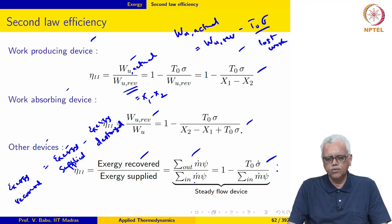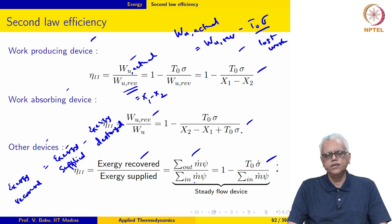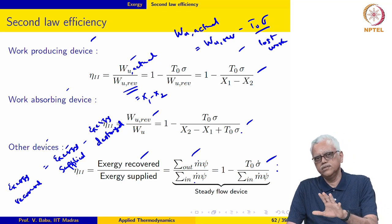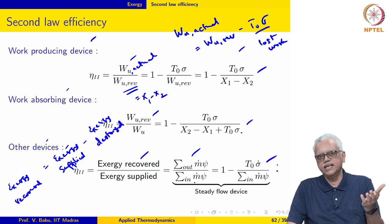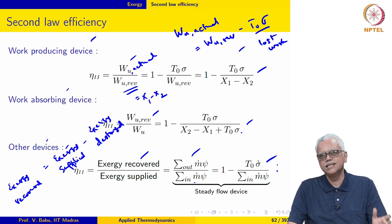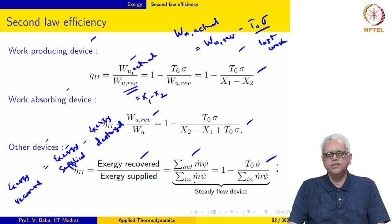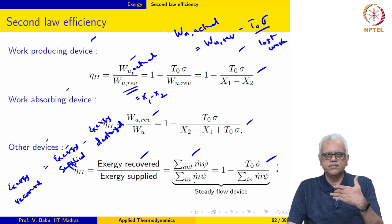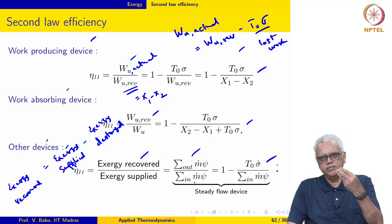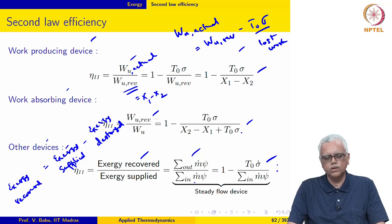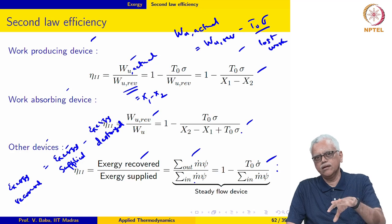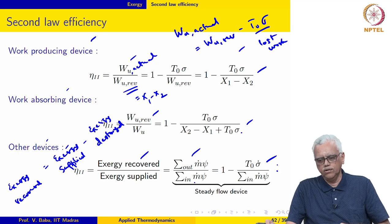Now let us see how we calculate second law efficiency for examples worked out in the previous course, where we performed first law analysis and determined entropy generated, work interaction, heat interaction, and so on. For those same examples, we will now calculate a second law efficiency.